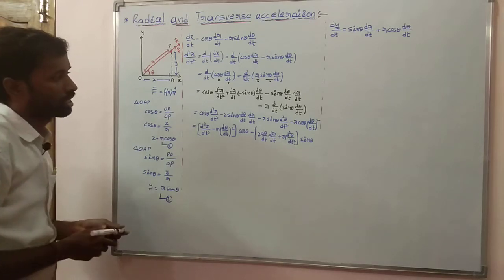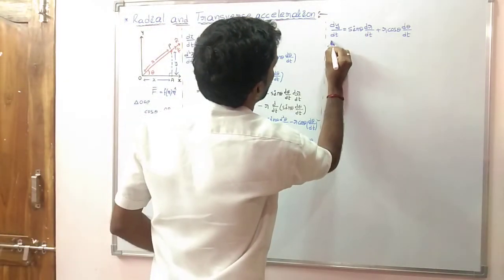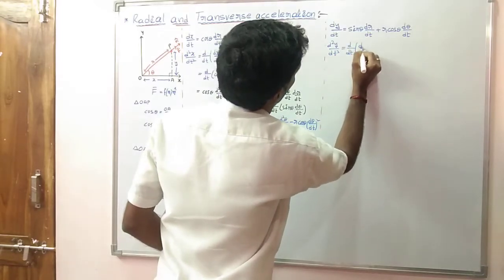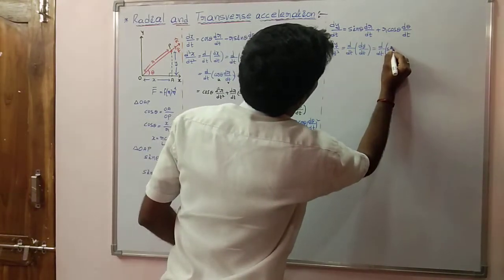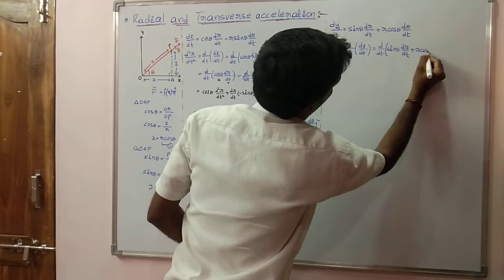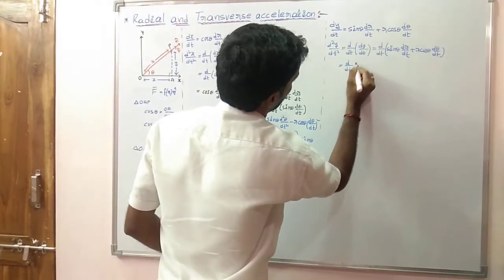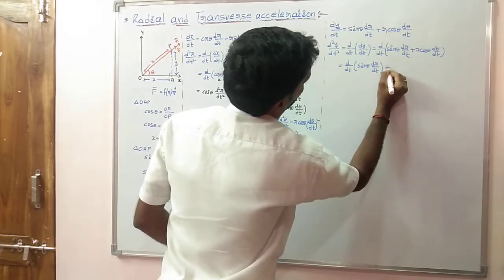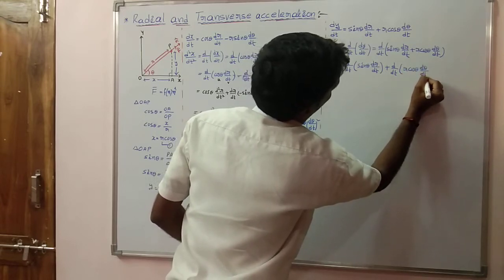This is the value of d²x/dt². Now we find out d²y/dt². d²y/dt² can be written as d/dt of dy/dt. The value of dy/dt is sin theta into dr/dt plus r cos theta into d theta/dt. Now we separate these two terms: d/dt of (sin theta into dr/dt) plus d/dt of (r cos theta into d theta/dt).